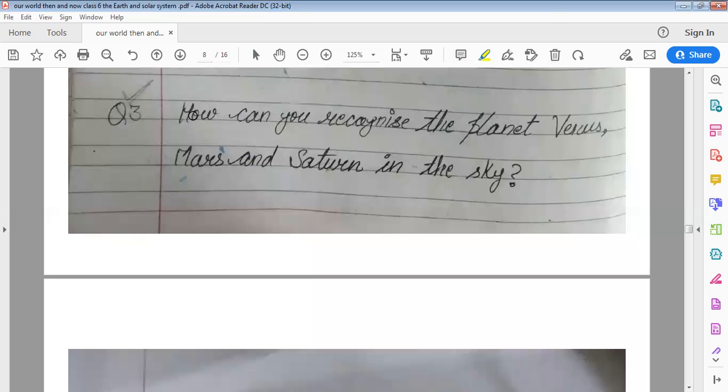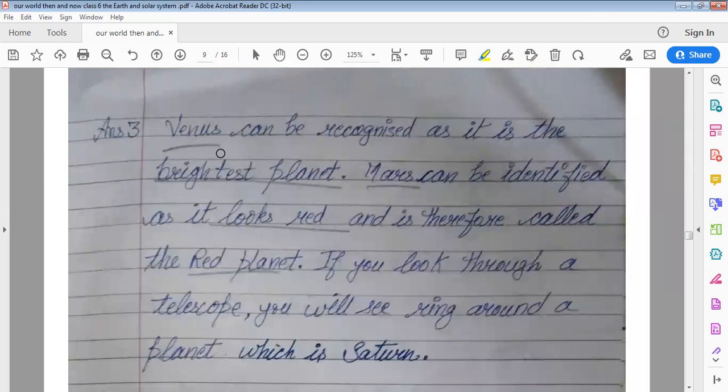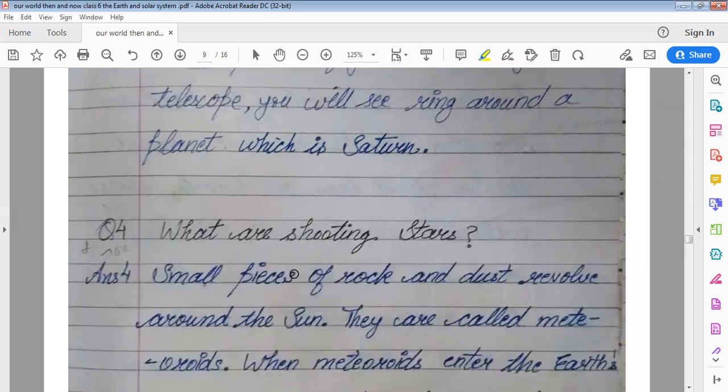How can you recognize the planet Venus, Mars and Saturn in the sky? Venus can be recognized as it is the brightest planet. Mars can be identified as it looks red and is therefore called the red planet. If you look through a telescope you will see rings around a planet which is Saturn.